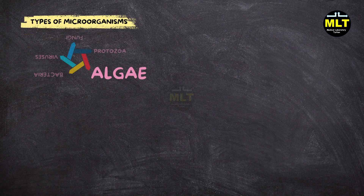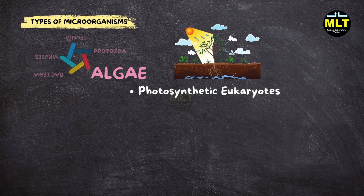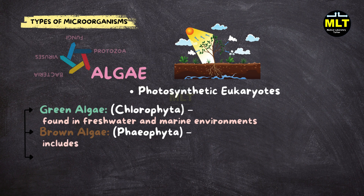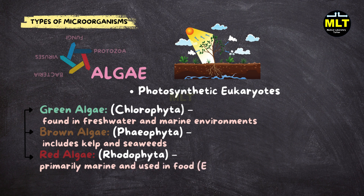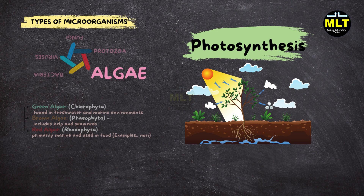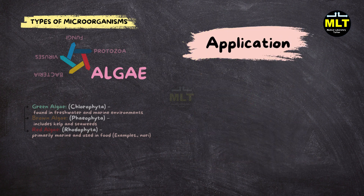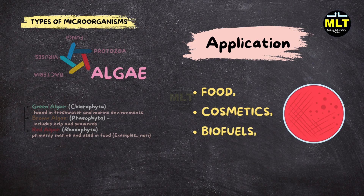Algae types. Algae are photosynthetic eukaryotes that can be classified into groups based on color and structure: Green algae (Chlorophyta), found in freshwater and marine environments; Brown algae (Phaeophyta), which includes kelp and seaweeds; and Red algae (Rhodophyta), primarily marine and used in food — example Nori. Algae are essential primary producers in aquatic ecosystems, converting sunlight into energy and producing oxygen. They are also used in food, cosmetics, biofuels, and as a source of agar for microbiological culture.